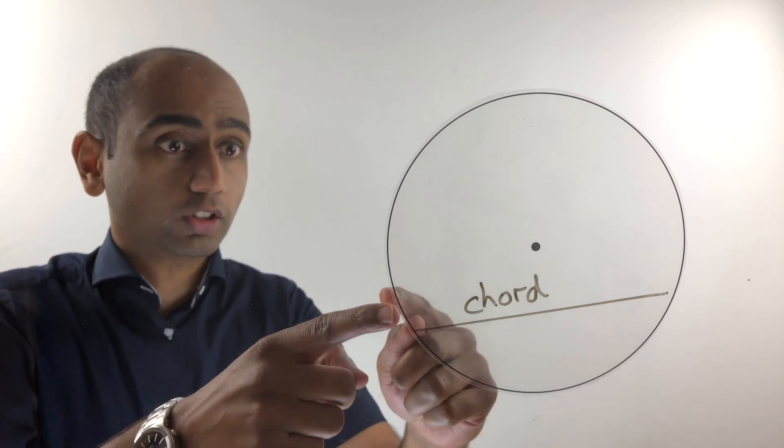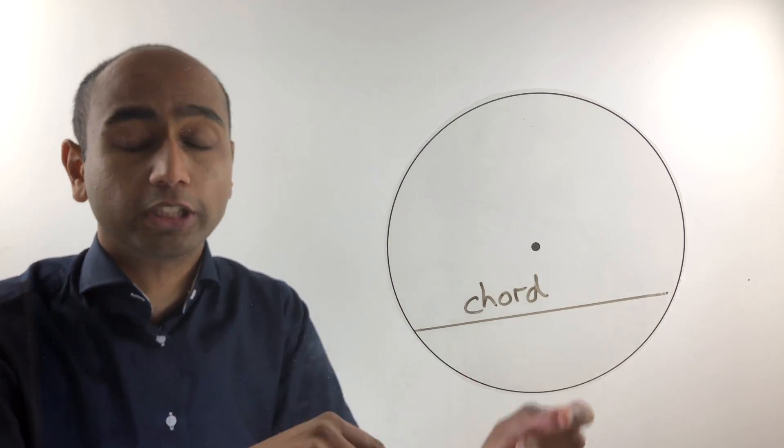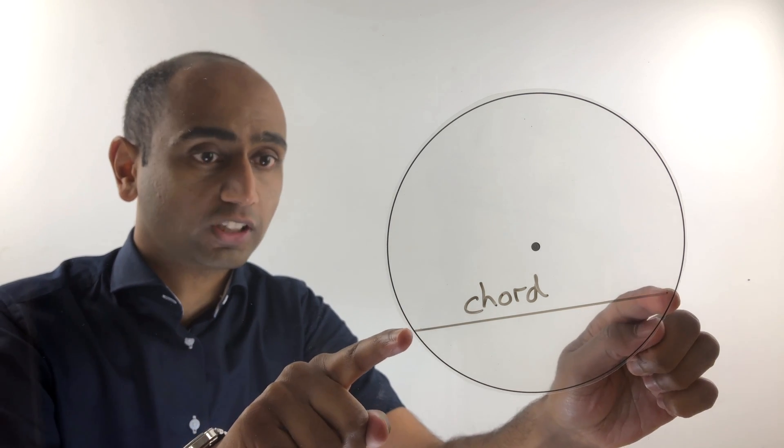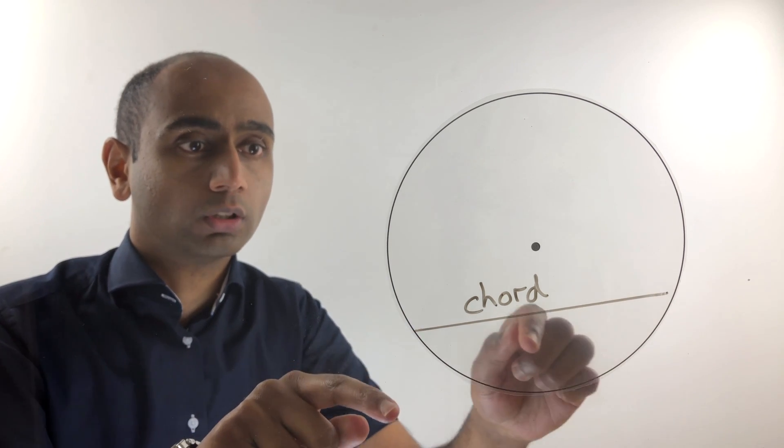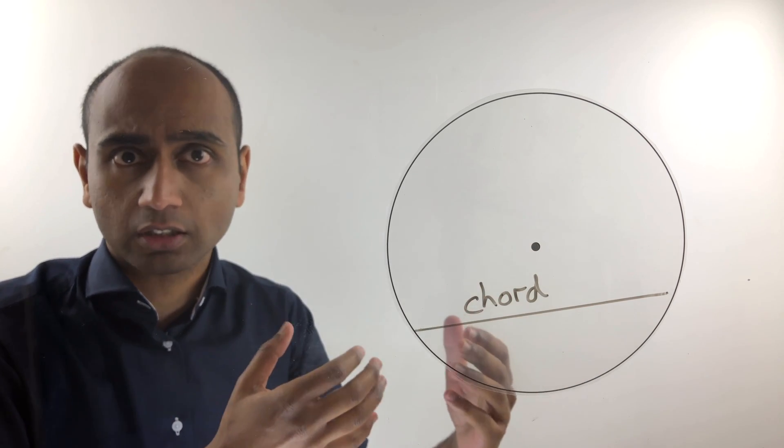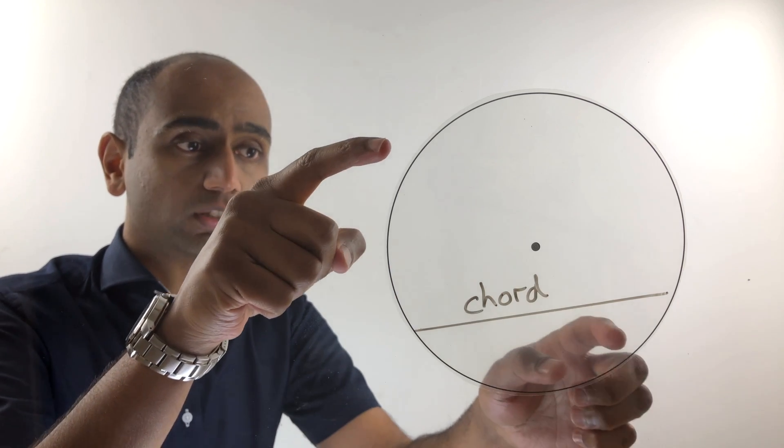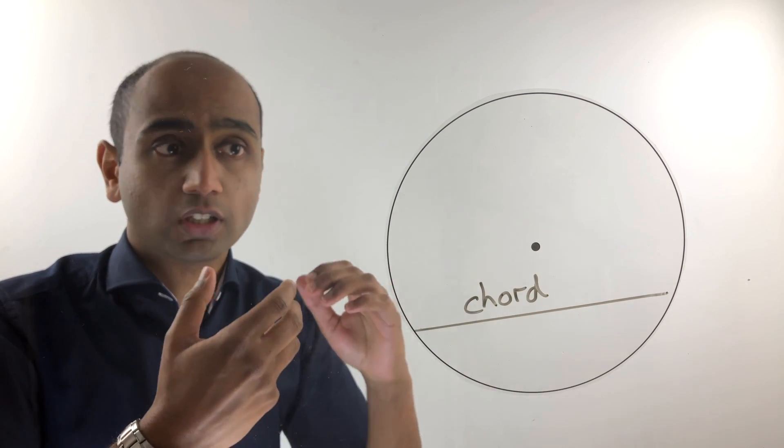Next we've got a chord. A chord is simply a straight line segment joining two points on the circumference of a circle. Now that sounds very familiar—it sounds like a diameter, that's also a straight line segment that joins two points on the circumference of a circle.